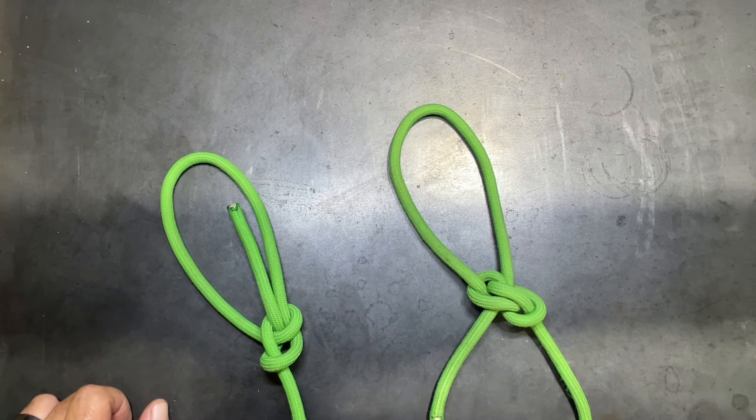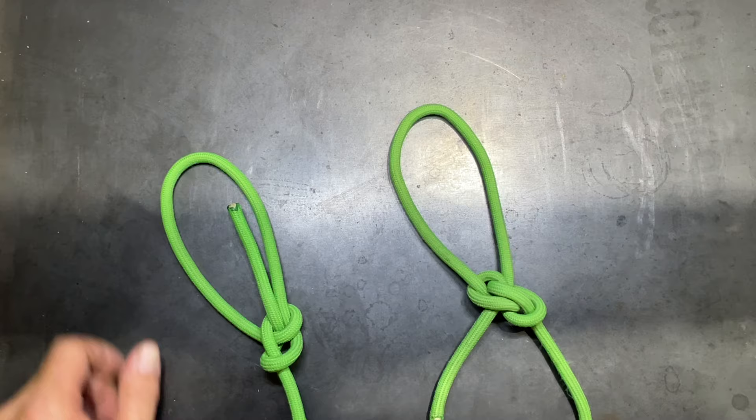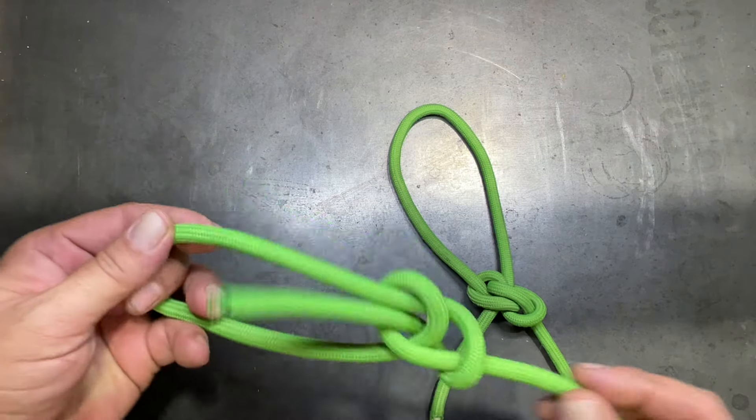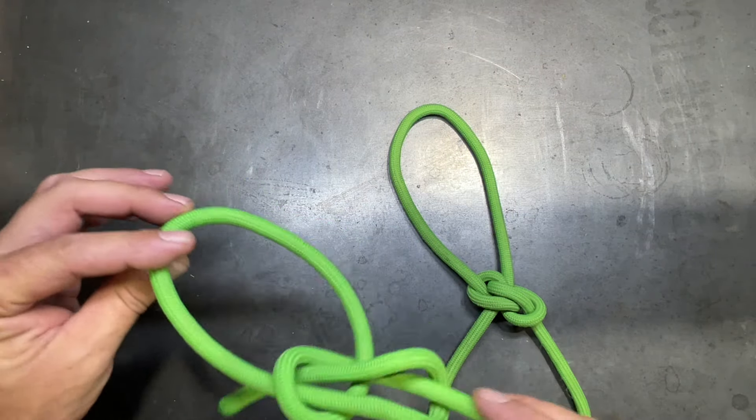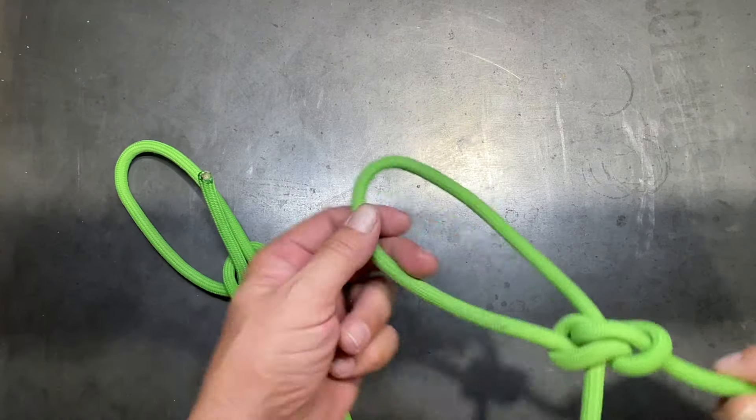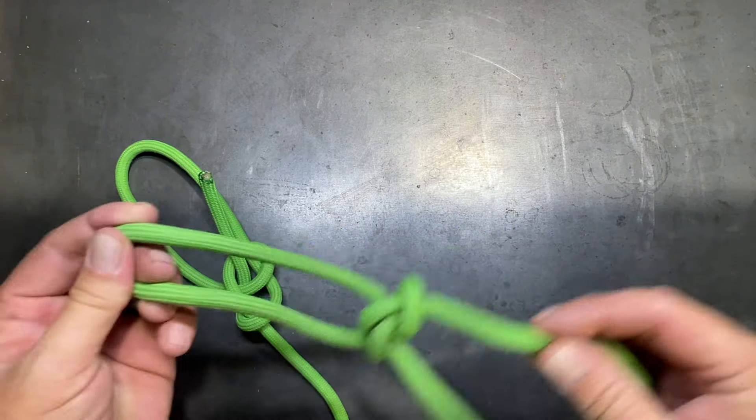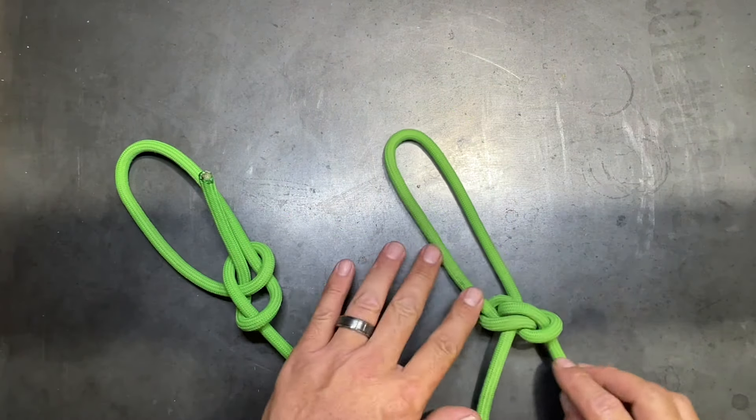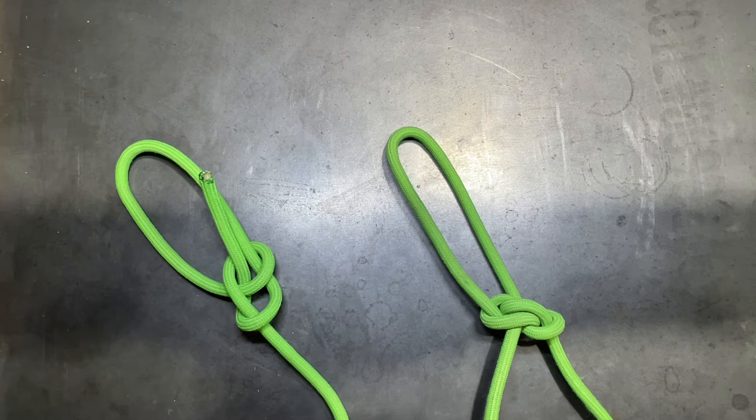Obviously, that's not a problem in the Zeppelin, and the bowline can be subject to cyclical loading where it can start to loosen off. The Zeppelin is a lot more resistant to that than the bowline is. So let's learn how to tie the Zeppelin loop.